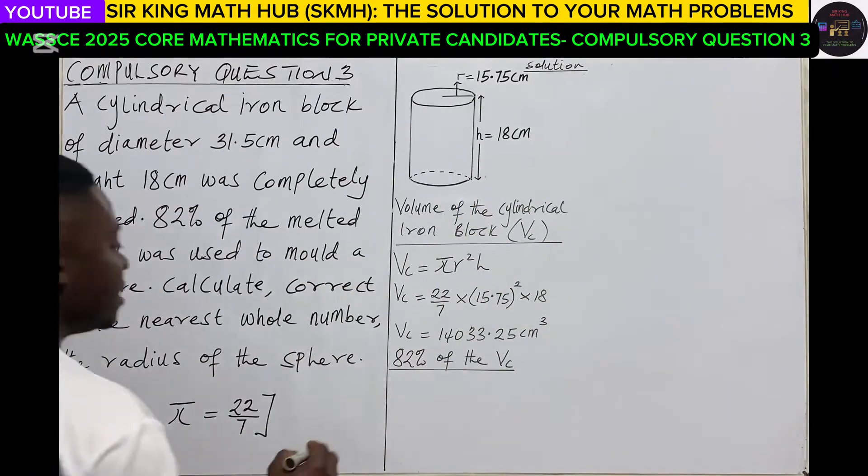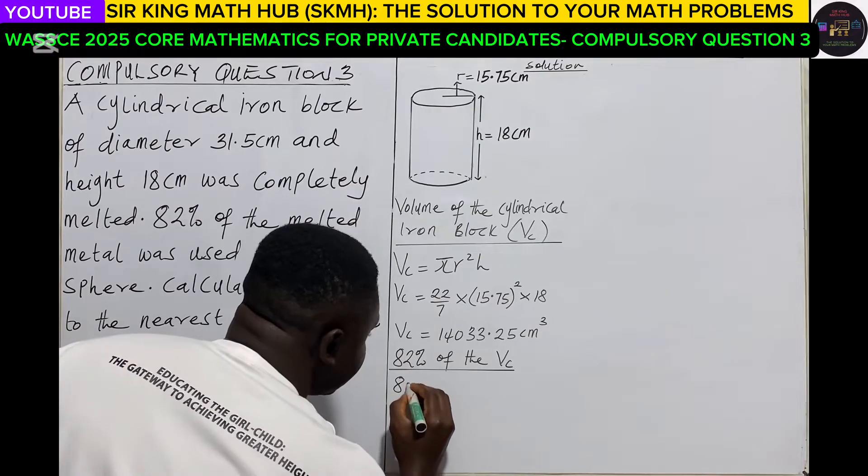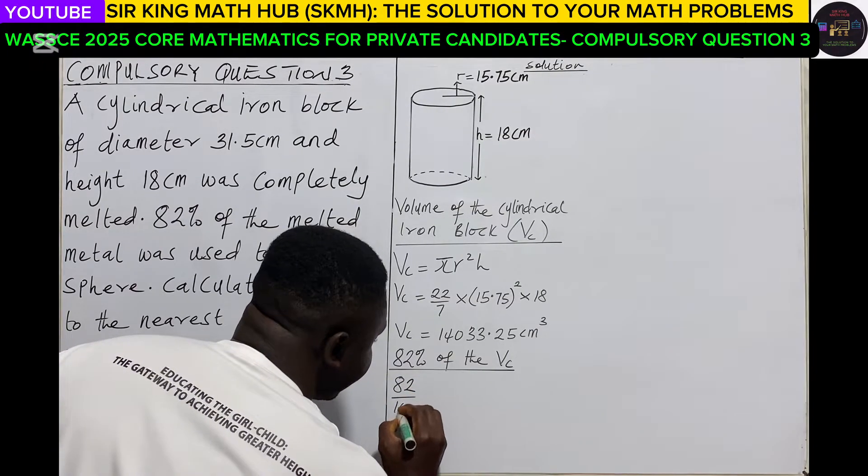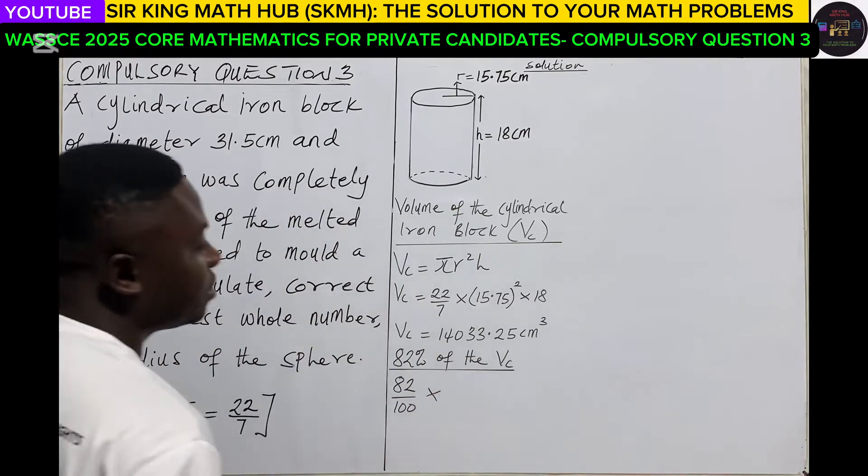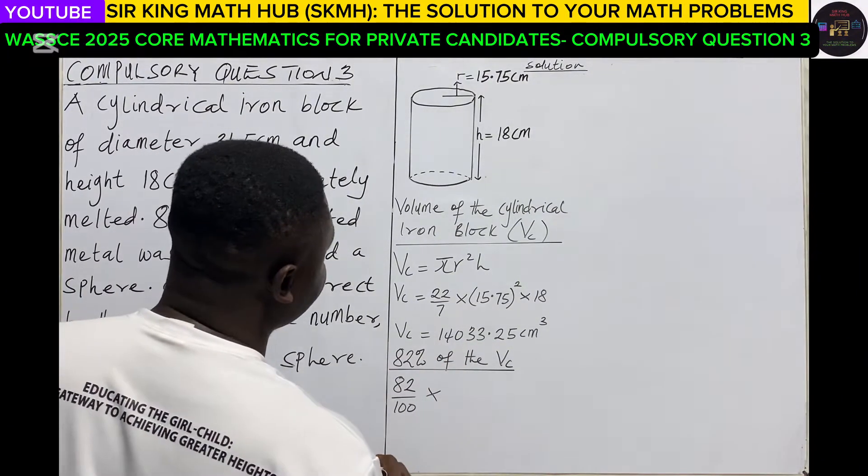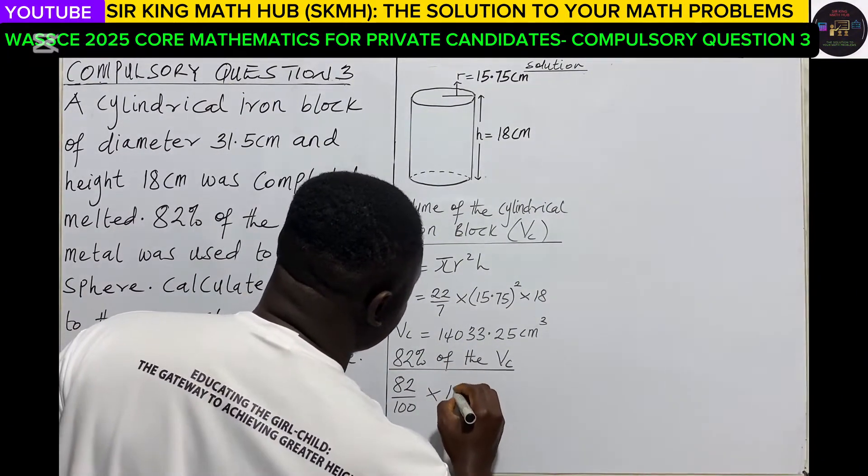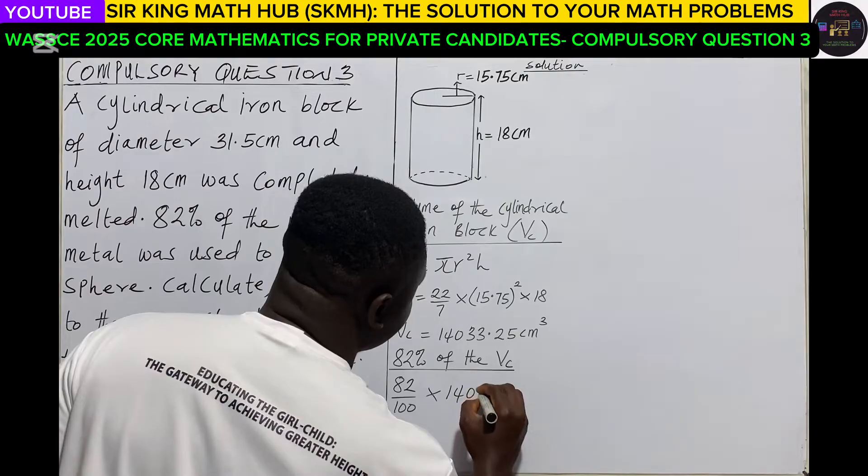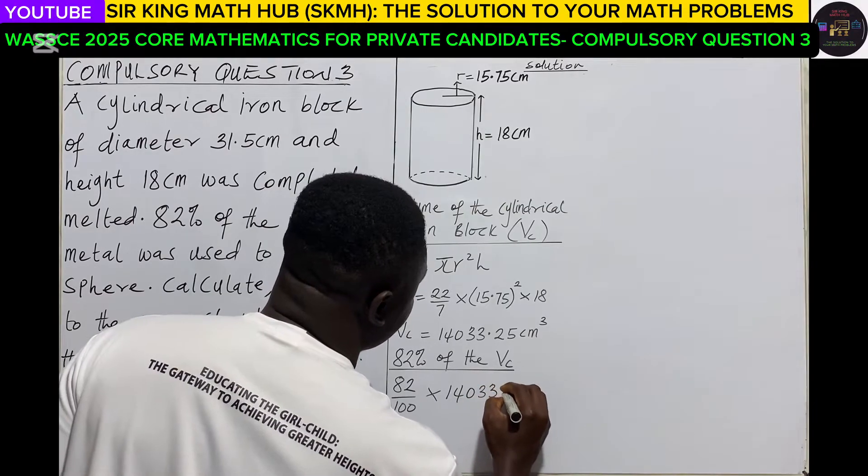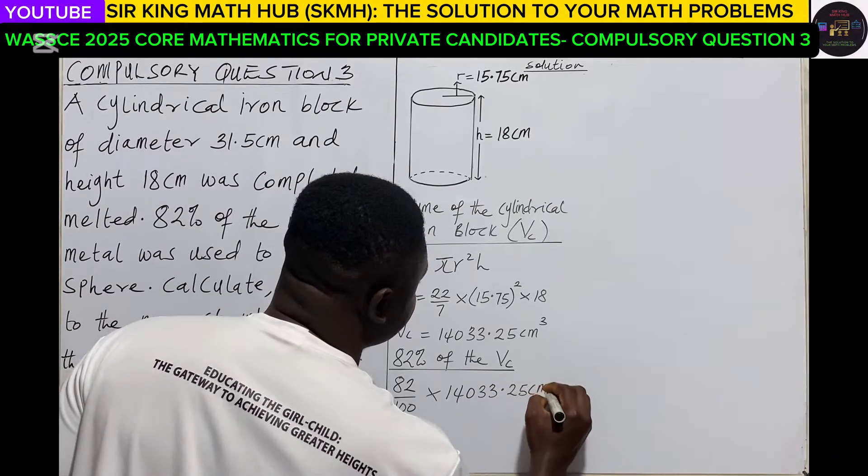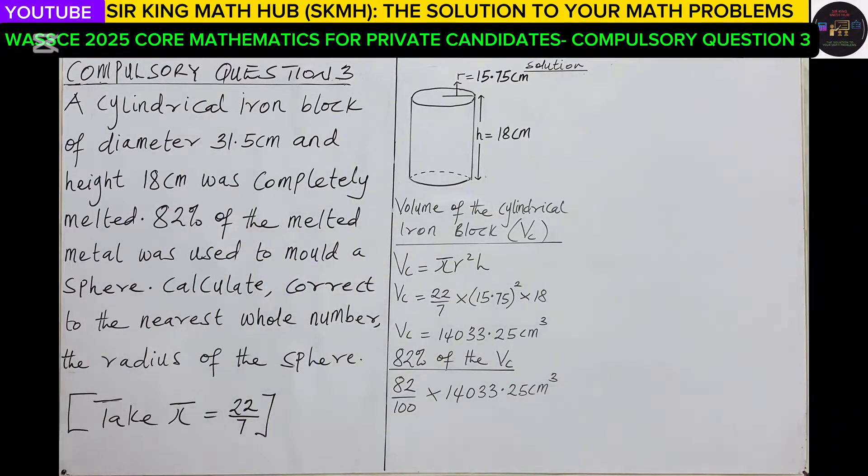Remember 82% is the same as 82 out of 100 times the volume of the cylinder, which is 14033.25 centimeters cube.